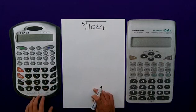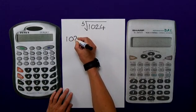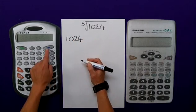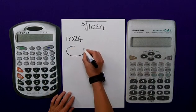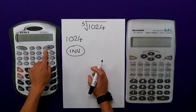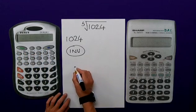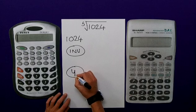The calculator on the left I'd start by typing in 1024. I'd then press the inverse button. Now on here it's actually purple in writing which refers to the purple sections just above the button. I'd then press the y to the x button.